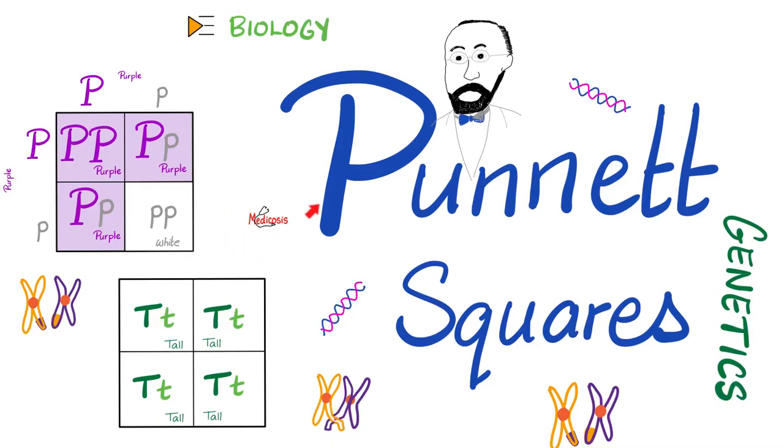Hey guys, it's Medicosis Perfectionators, where medicine makes perfect sense. Let's continue our genetics series inside the biology playlist. Today, we shall talk about the Punnett squares, the monohybrids, as well as the dihybrid crosses. With that said, now let's get started.